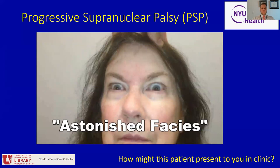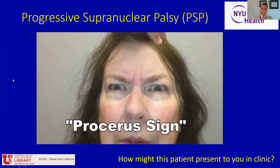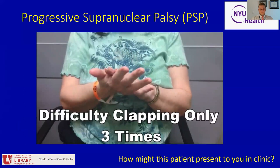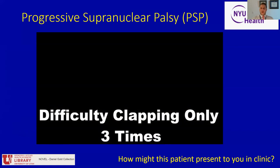Another feature of PSP is so-called astonished facies — a classic appearance of the face. The procerus sign is the crease you see here between the eyebrows, where the procerus muscle can have this abnormal appearance in individuals with PSP. Dr. Gold is demonstrating here the applause sign, where patients are asked to clap just three times in a row and cannot inhibit themselves from clapping beyond that — you heard her clap four times when he asked her to clap only three.